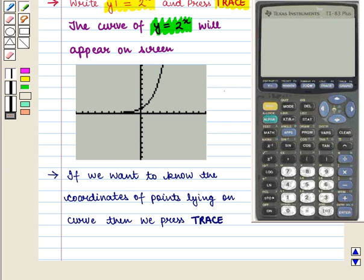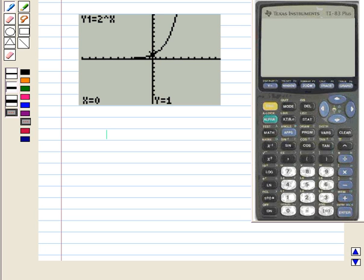The graph will appear. If we want to know the coordinates of points on the curve, we press trace. To see the point, we move the cursor on the graph. This point on screen shows X equals 0 and Y equals 1.